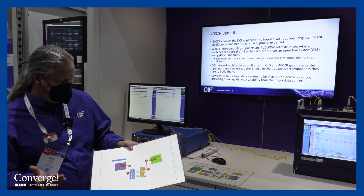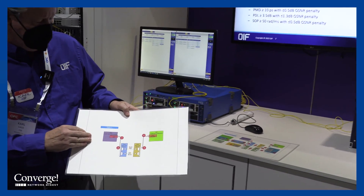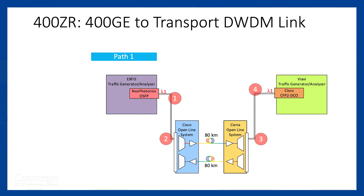For the first path, I'm going to start in the EXFO test equipment. I'm going to go through an open line system — there are two vendors to this open line system. I'm going to come out of the open line system into the VIAVI test equipment. Notice this is an OSFP client optics module. On the other side, I have a CFP2 DCO transport optics module. This is a very unique setup, and perhaps one of the first implementations of 400ZR. This is a complete link.